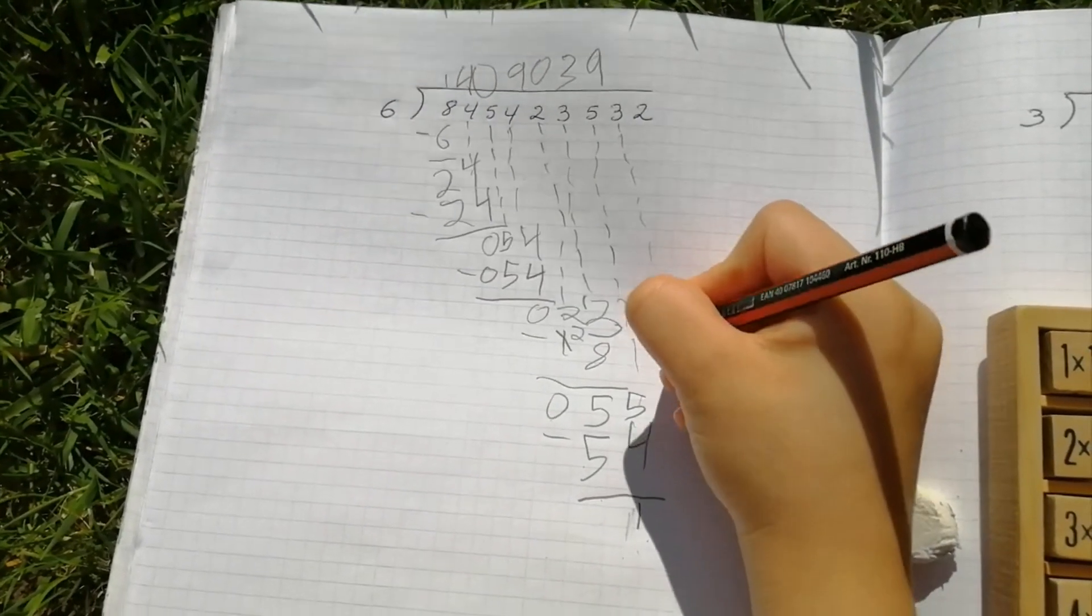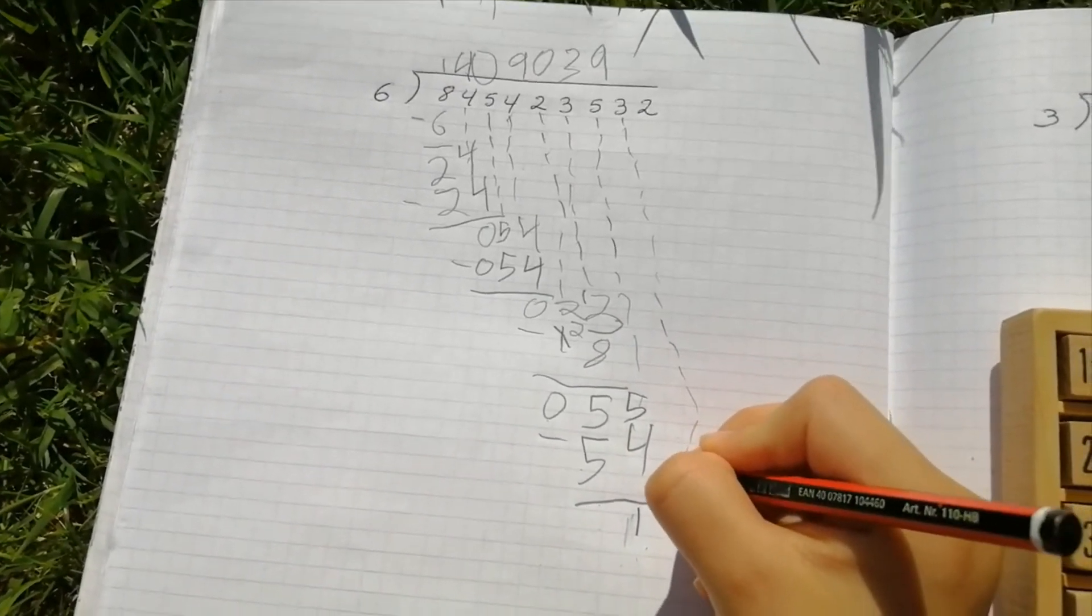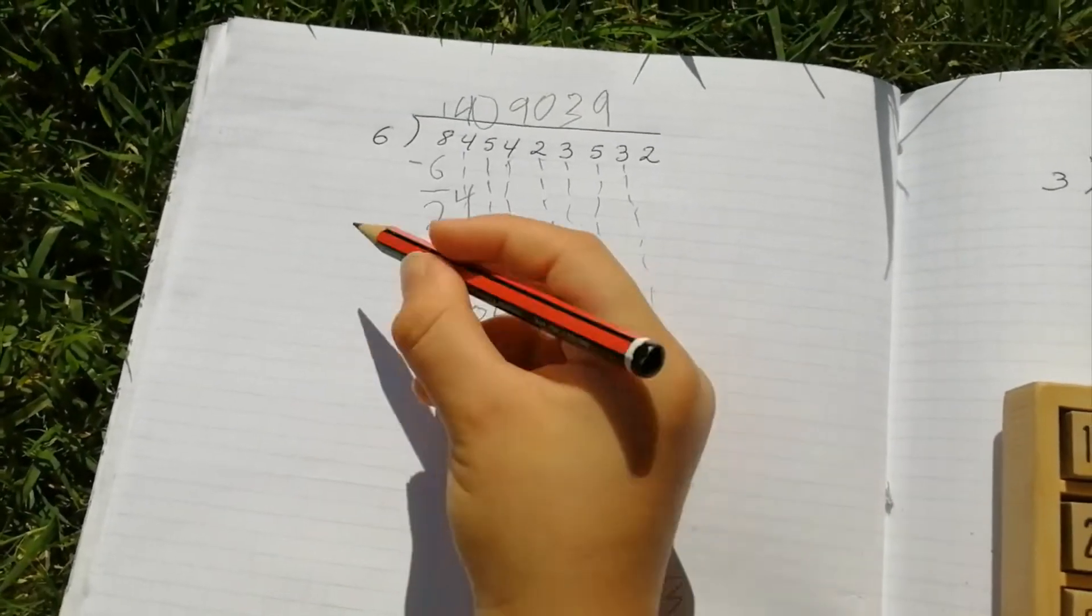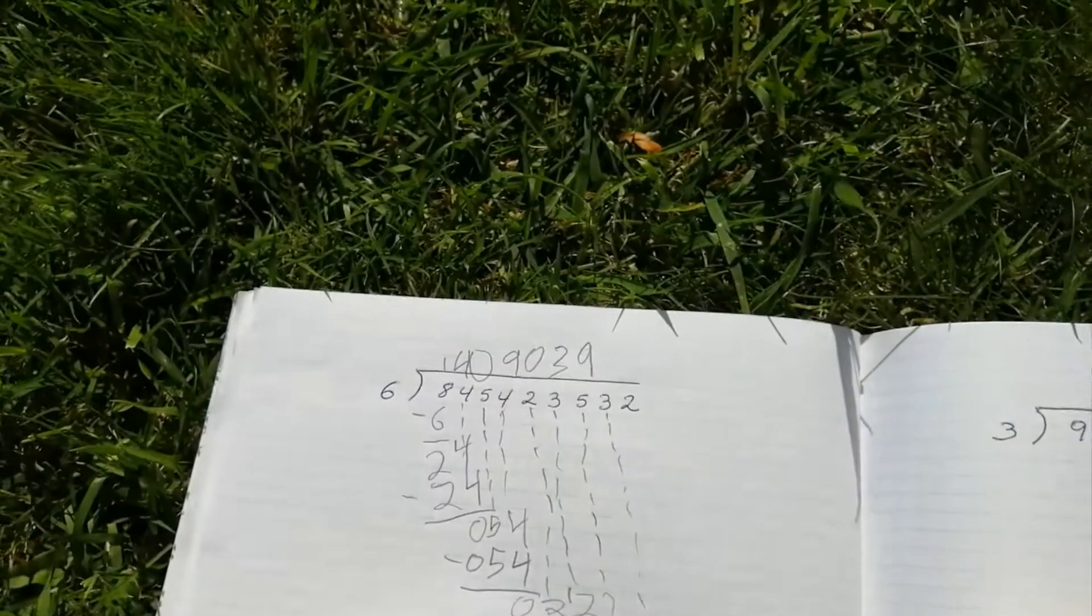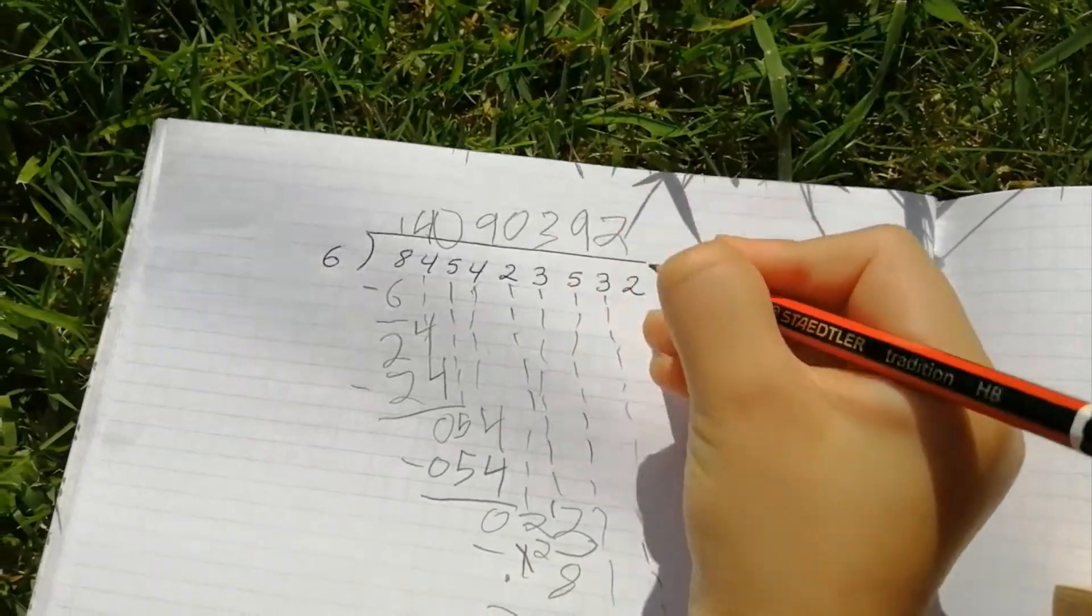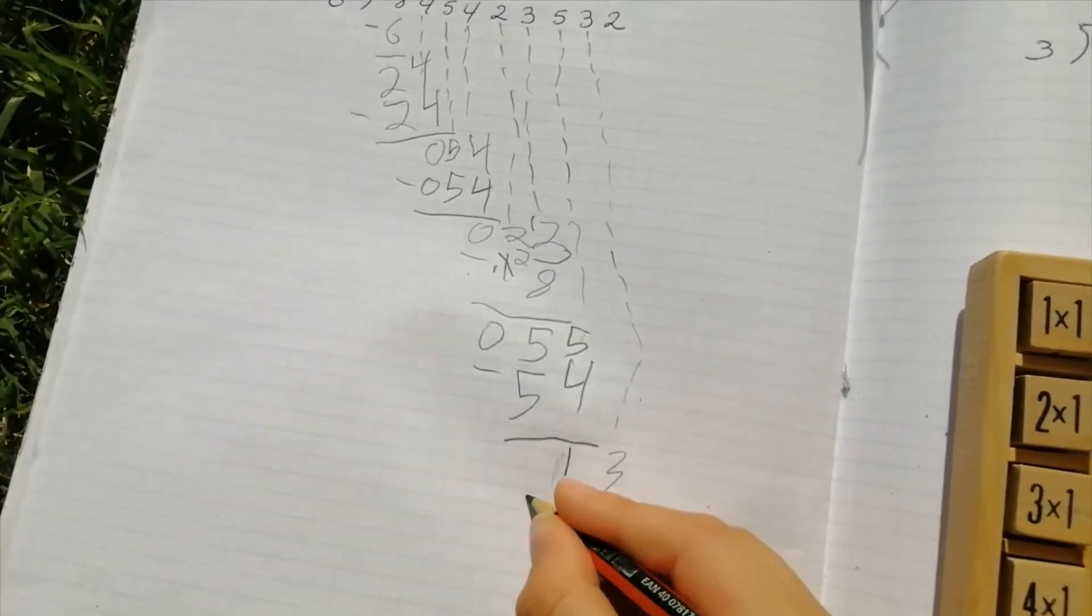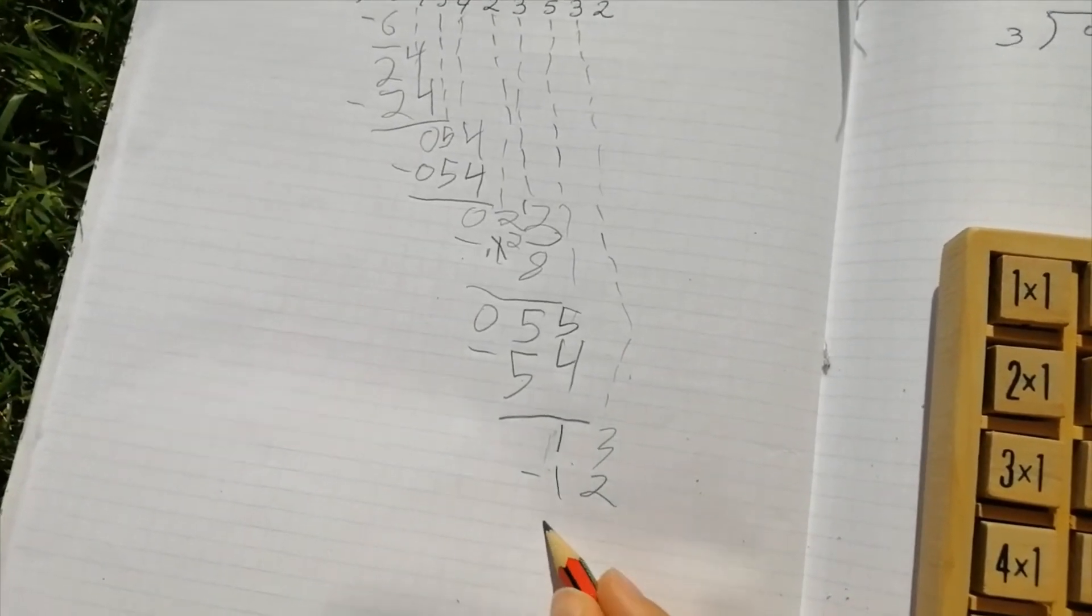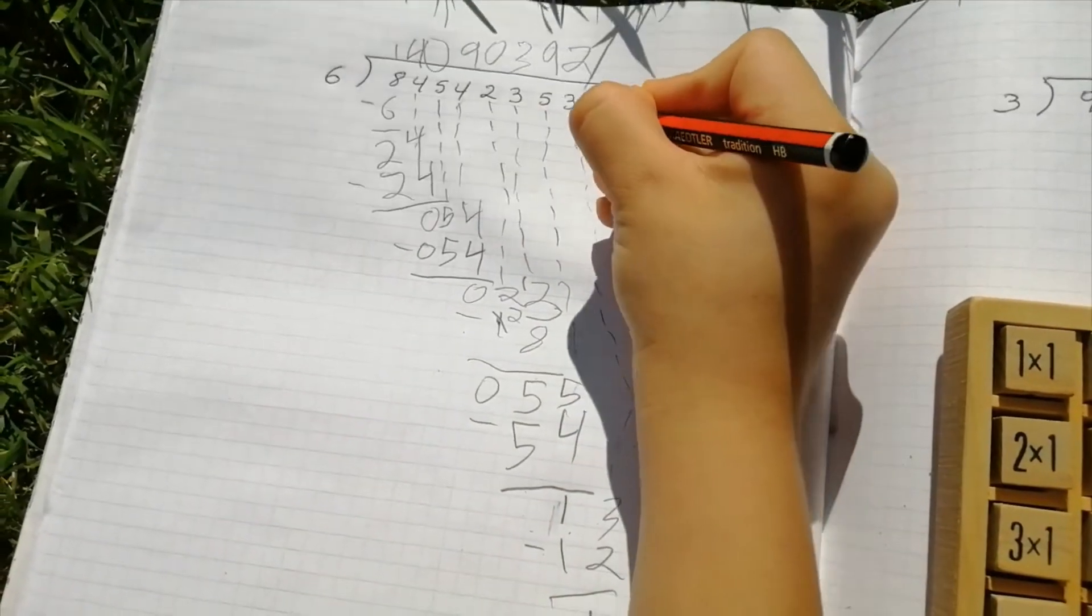Oh my god, my arm hurts a lot. Hit three. And six in thirteen is two. It's two. And six times two is twelve. Minus twelve equals one. And put the next number down.